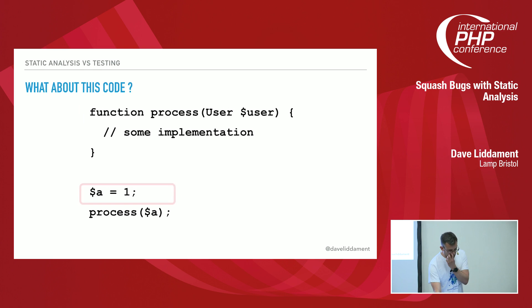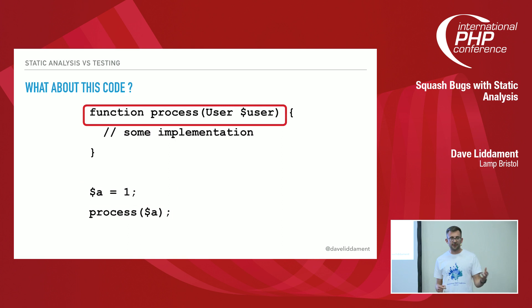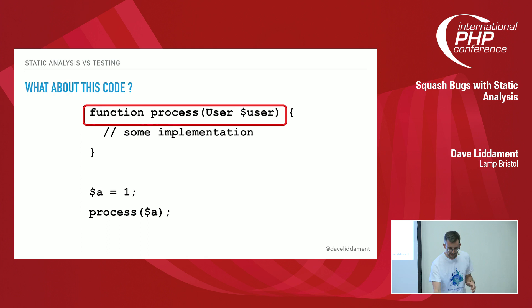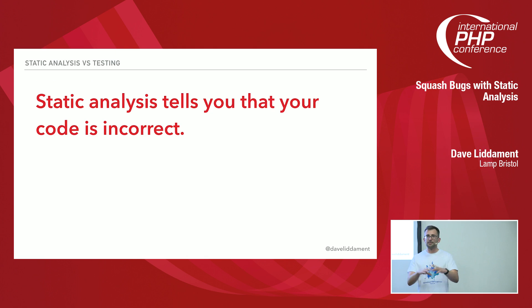However, how about this code? Here we start off the same — giving A an integer value of 1 and calling process, passing A to it. But we can see that process is expecting a User object. The fact we're passing an integer means that if we ran this code for real, we would get a type error saying I'm expecting User, I've been given an int. So if we ran this code, it would definitely fail. And this is what static analysis does — it tells us that our code is incorrect.